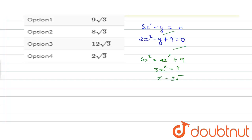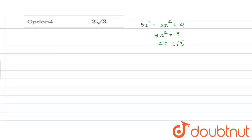So A = ∫_{-√3}^{√3} (5x² - (2x² + 9)) dx.